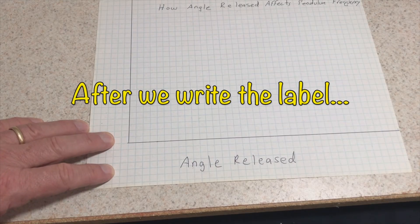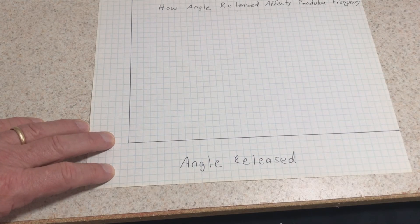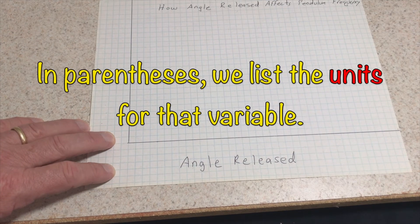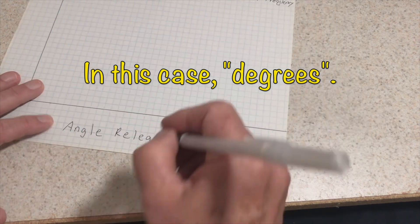After we write the label, in parentheses, we list the units for that variable. In this case, degrees.